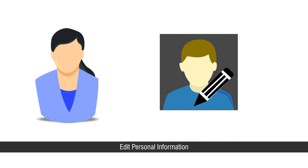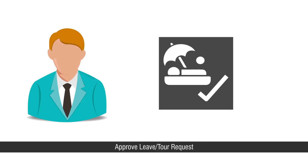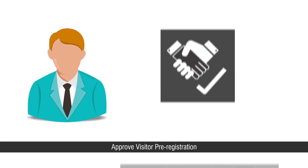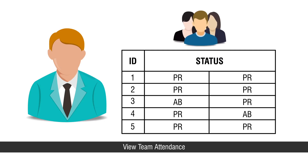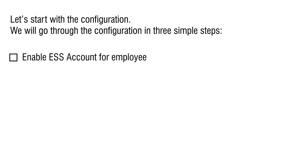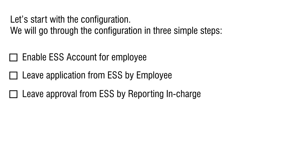Reporting in charges can use ESS to approve leave or tour requests, approve visitor pre-registration, authorize attendance, plan shifts and schedules, and view team attendance. We will go through the configuration in three simple steps: first, enable ESS account for employee; second, leave application from ESS by employee; third, leave approval from ESS by reporting in charge.